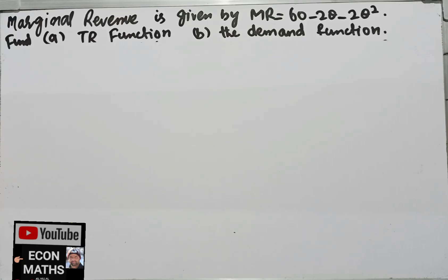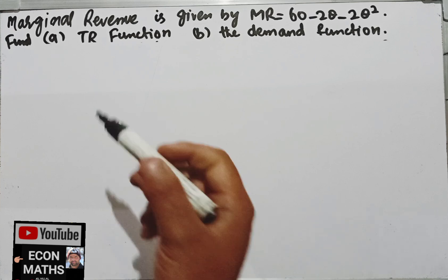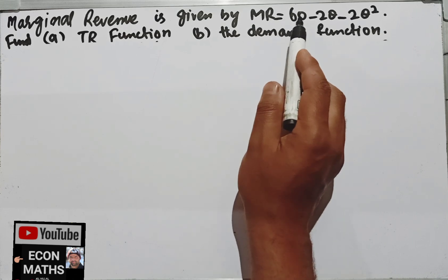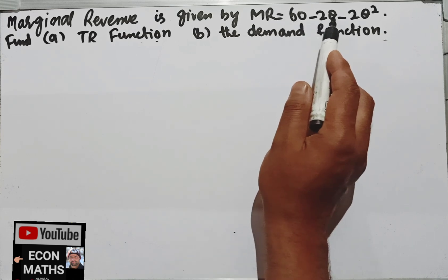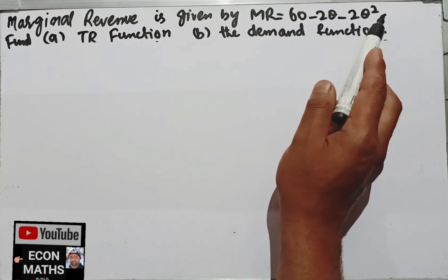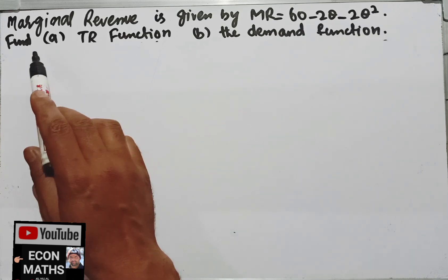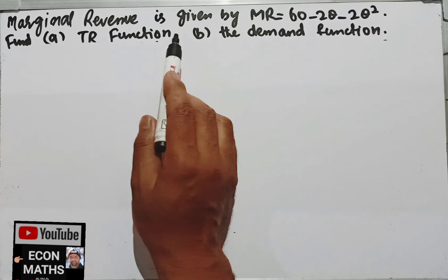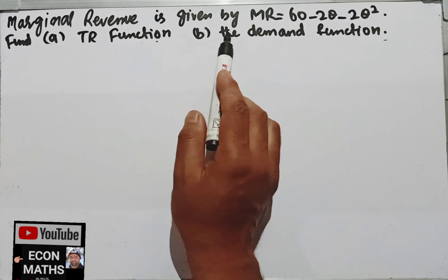Hi, this is a video in the mathematical economics series. We will solve a numerical on the applications of integral calculus in economics. The question is: marginal revenue is given by MR = 60 minus 2Q minus 2Q squared, where Q is the quantity. Find: part one, the total revenue function; part two, the demand function.